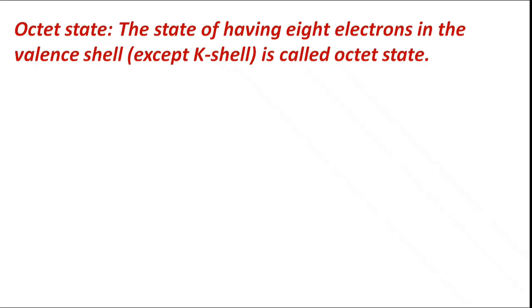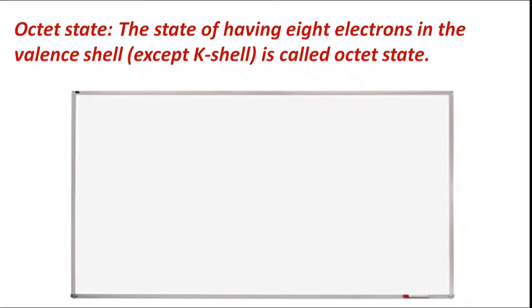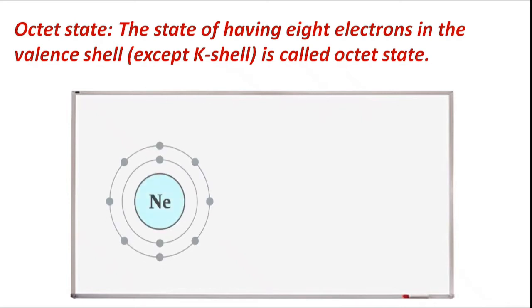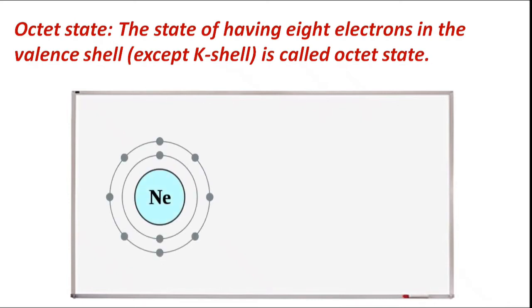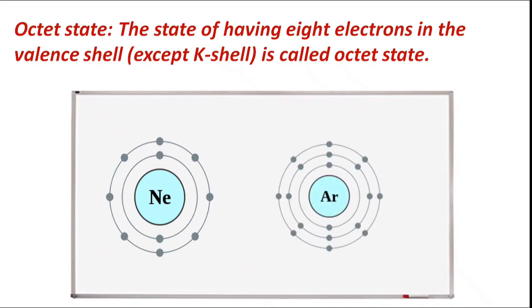Octet state is the state of having eight electrons in the valence shell, except the K shell. In the octet state, atoms are more stable. Neon has eight electrons in its valence shell, hence it is in the octet state. Similarly, argon has eight electrons in its valence shell and is also in the octet state.